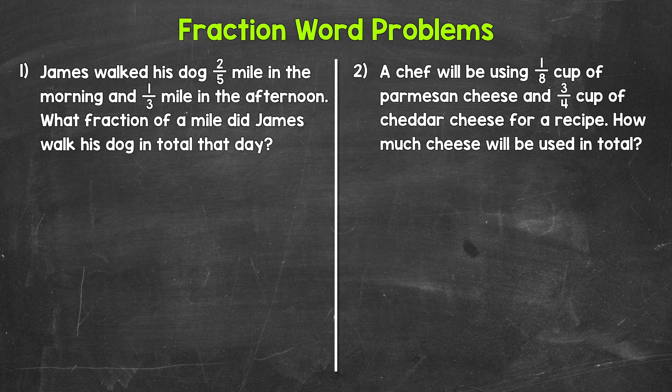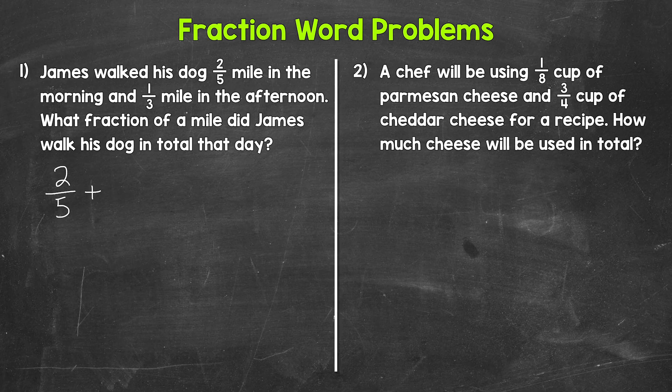Let's jump into number one where we have: James walked his dog two-fifths of a mile in the morning and one-third of a mile in the afternoon. What fraction of a mile did James walk his dog in total that day? So here we need to add to find our answer. We need to take the distances — the morning and the afternoon — and combine them to find the total distance. So two-fifths of a mile in the morning plus one-third of a mile in the afternoon.